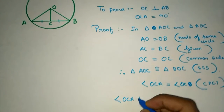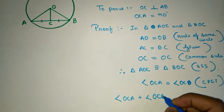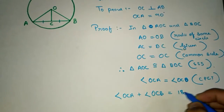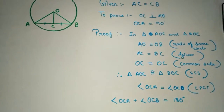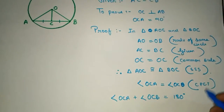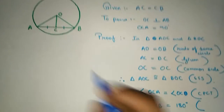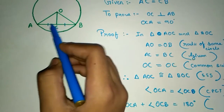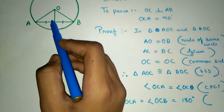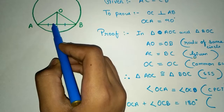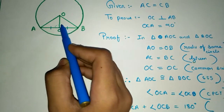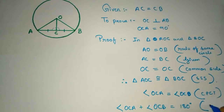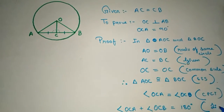Now, OCA plus OCB is equal to 180 degrees, because they form a linear pair of angles — this is a straight line, so by the linear pair property, this angle plus this angle equals 180 degrees.